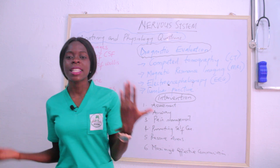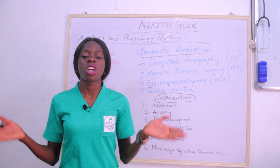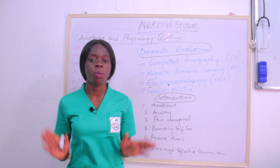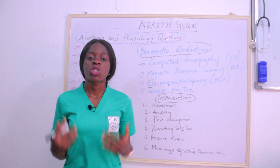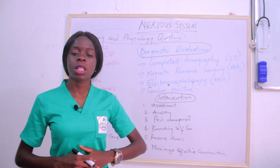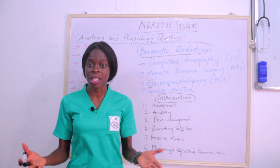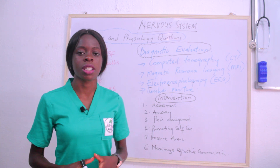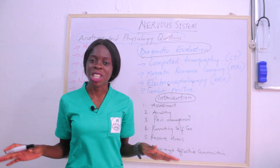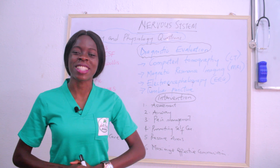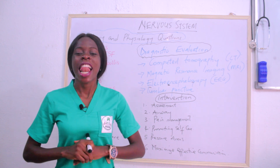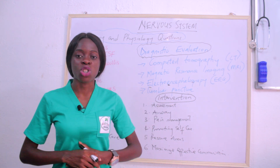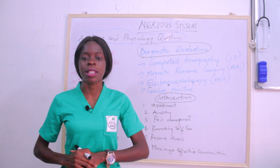The sixth nursing intervention is to maximize effective communication. Try as much as possible to communicate and talk with the patient so that they do not go into a defensive phase or feel left alone. That covers the key facts relating to the nervous system for today.